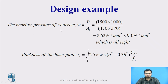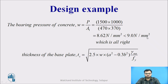The bearing pressure of concrete is determined by w = P/A1 = 1500 × 1000 divided by the actual area provided. The value comes out to be 8.62 N/mm², which is less than 9 N/mm² — which is safe. The 9 N/mm² limit comes from 0.45 × fck = 0.45 × 20 = 9 N/mm² for M20 grade concrete, which is greater than 8.62, so it is safe.